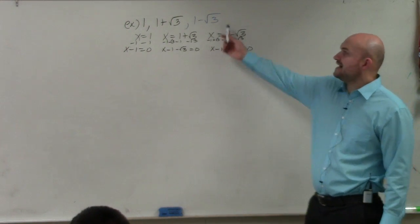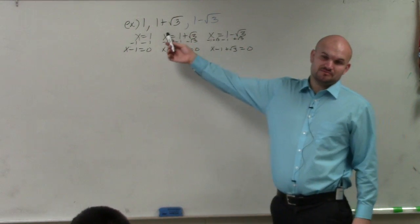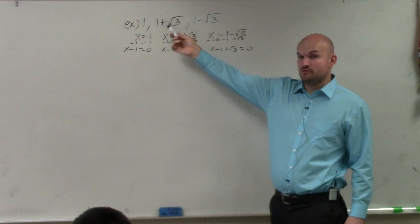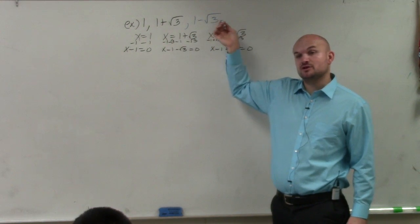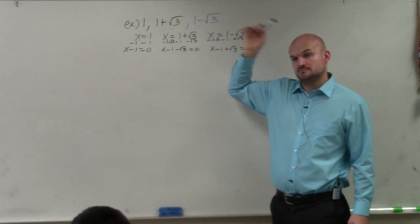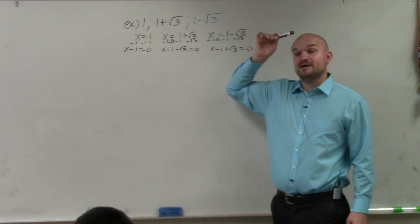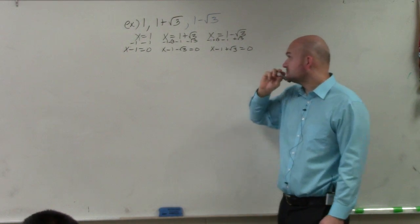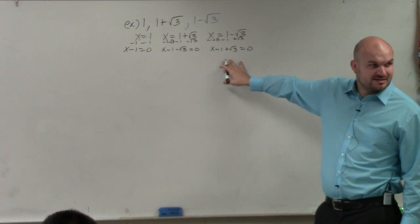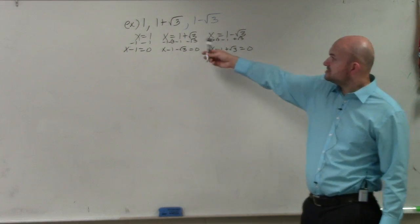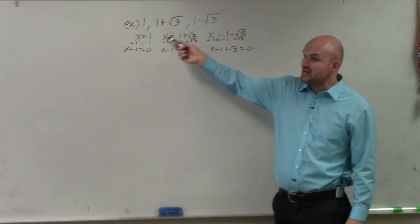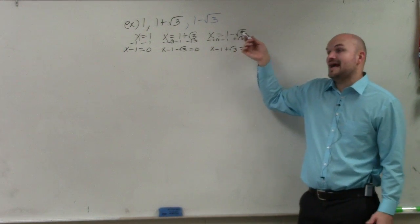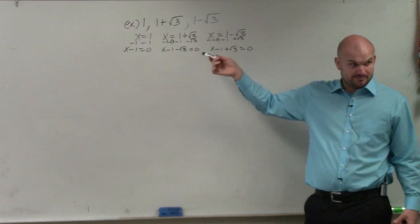Just to note that I didn't give it to you — make sure whenever you're provided a square root, you have to include the conjugate. It applies for imaginary numbers, and it's for rational numbers as well. Does everybody see how I set them all equal to zero? Notice how here I had to subtract 1 and subtract the square root of 3, and here I had to subtract 1 and add the square root of 3.